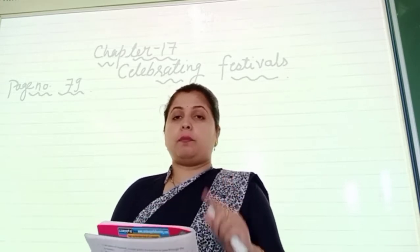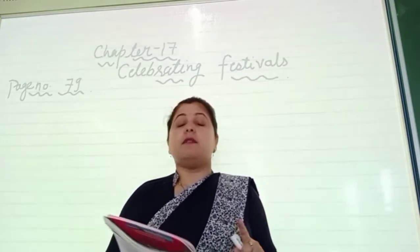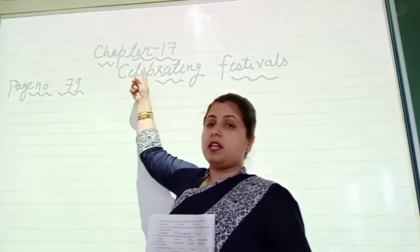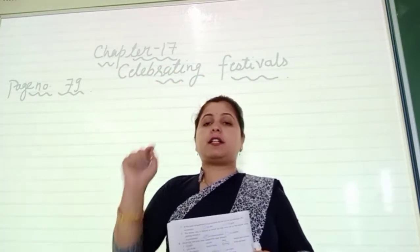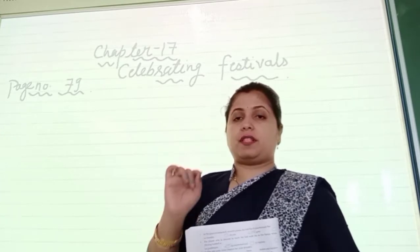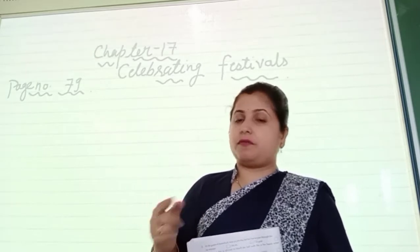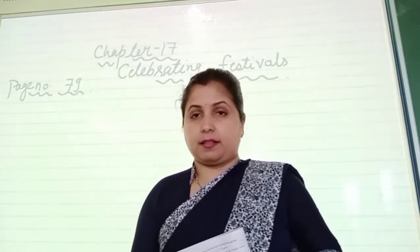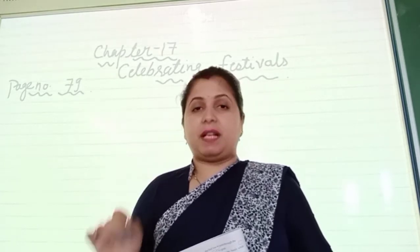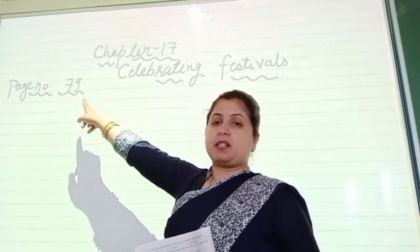So everyone open your book along with your pencils. Take out your pencils, open your book to page number 79 — Celebrating Festivals. We are going to start the exercises along with the internal questions of the same chapter. First we will do the internal questions, then after we will start the exercise. So all of you take out your book and pencils and open page number 79.